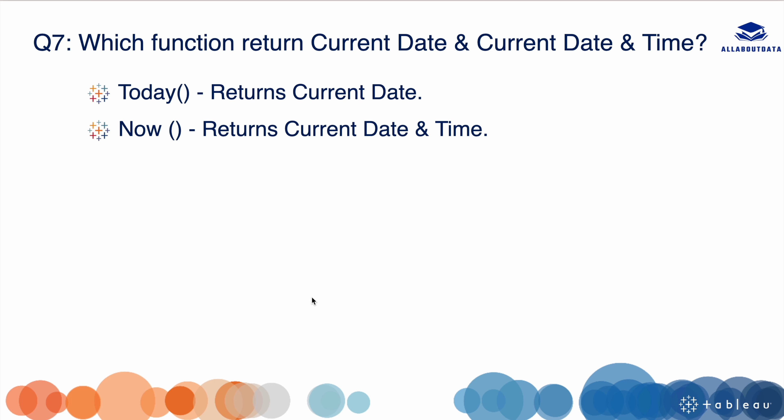Our next question is: which function returns the current date and which returns the current date and time? This is a simple question but can be confusing. The TODAY() function returns the current date, and the NOW() function returns the current date and time. That's all for this video — thank you so much guys. If you liked the video, please like, share, and subscribe, and stay tuned for upcoming videos.